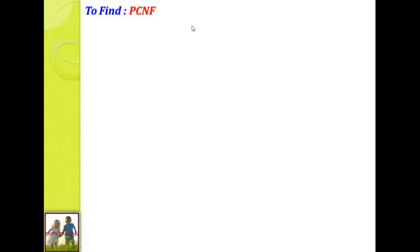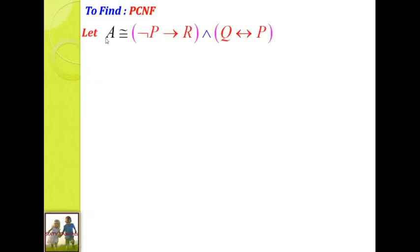Now we find PCNF. What is PCNF definition? PCNF is nothing but the product of max terms. Each max term should not contain the same variable and its negation. So, let us consider the given statement is A. Step number 1: remove all conditional and bi-conditional symbols using the equivalent law and double equivalent law. Here two symbols are given. Once we eliminate these symbols, the expression will be in normal form. Normal form should contain only three connectives: OR, AND, and negation only.